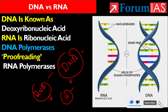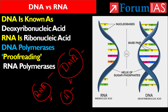Both are nucleic acids — deoxyribonucleic acid and ribonucleic acid. DNA is a double-stranded molecule while RNA is a single-stranded molecule. DNA has an anti-parallel helix structure, whereas RNA has a loop-like structure.